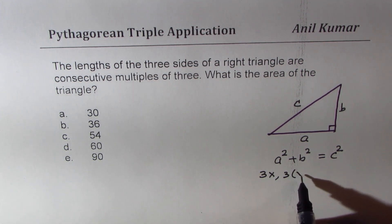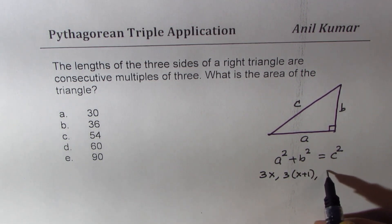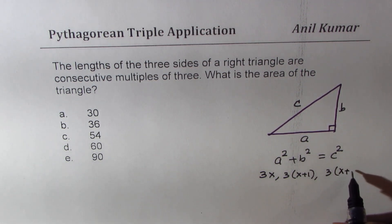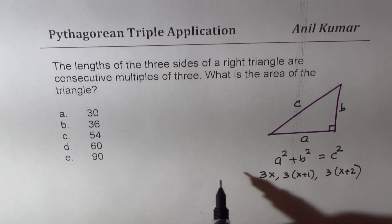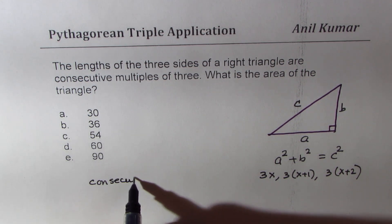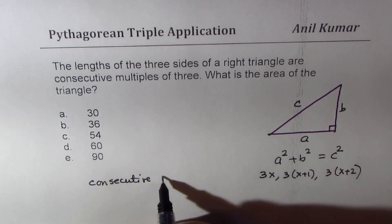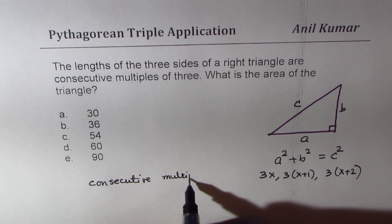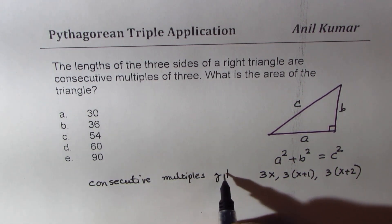three times X plus one, and three times X plus two. So these are, in general, consecutive multiples of three.